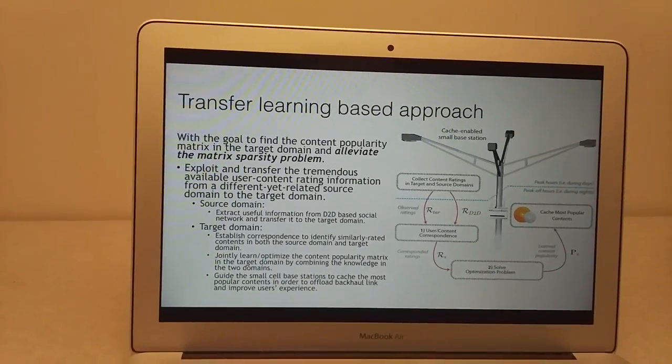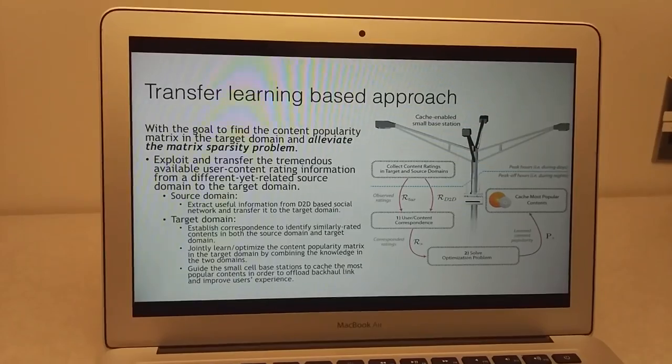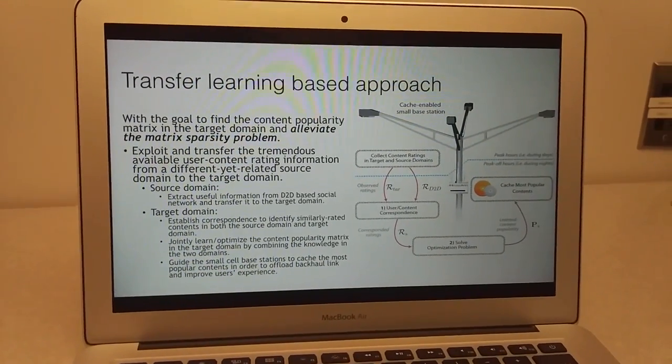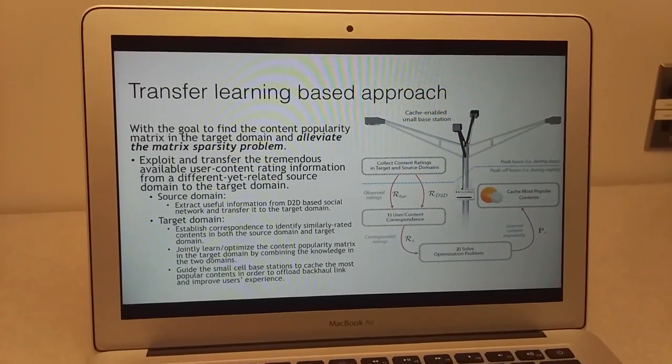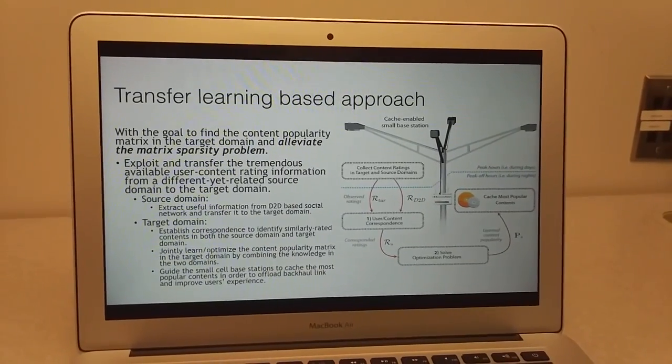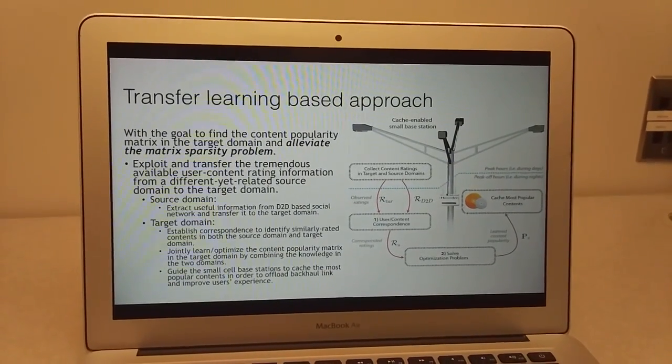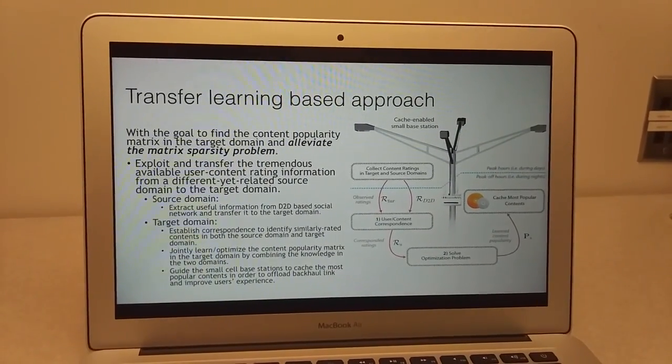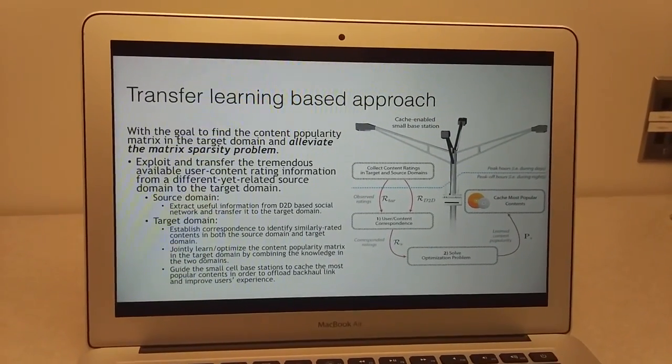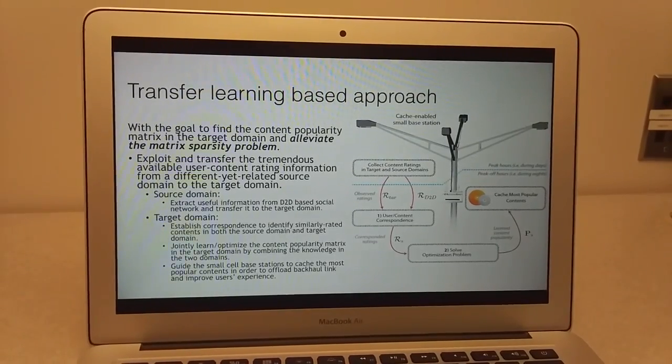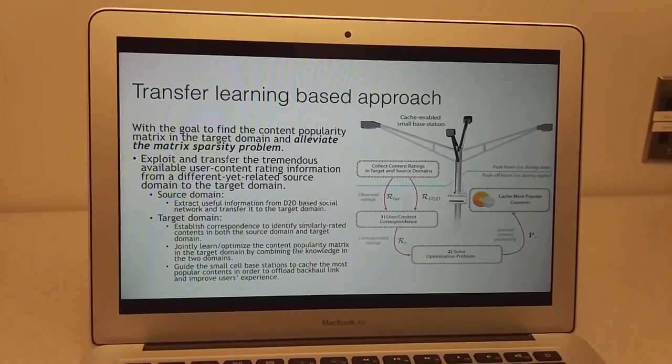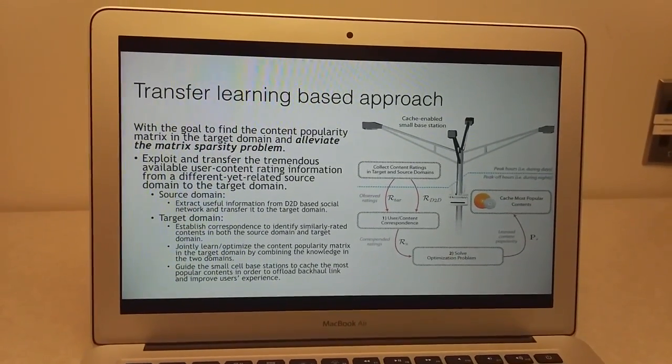In this paper, the author proposed to use a transfer learning-based approach with the goal to find the content popularity matrix in the target domain and alleviate the matrix sparsity problem. Basically, the idea is to exploit and transfer the tremendous available user content reading information from a different yet related source domain to the target domain.